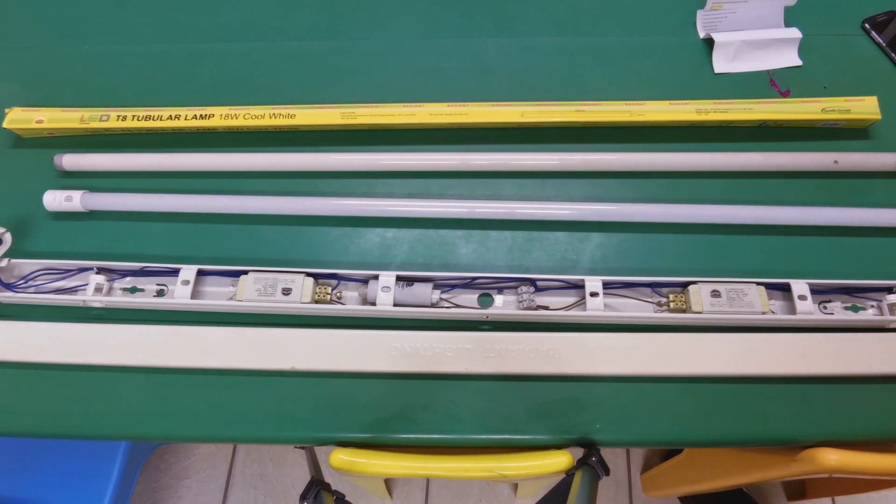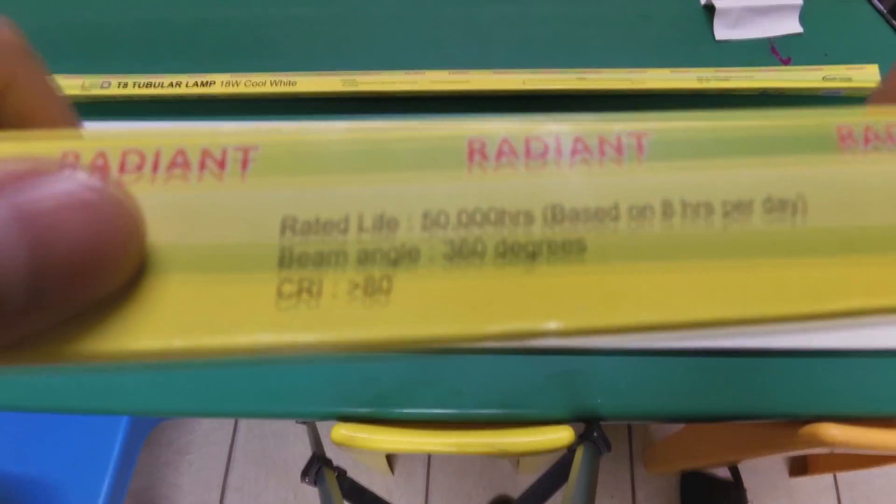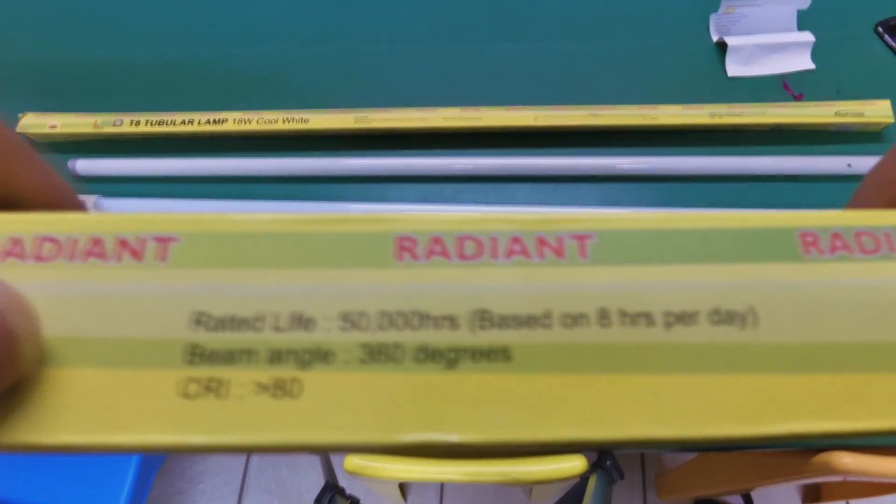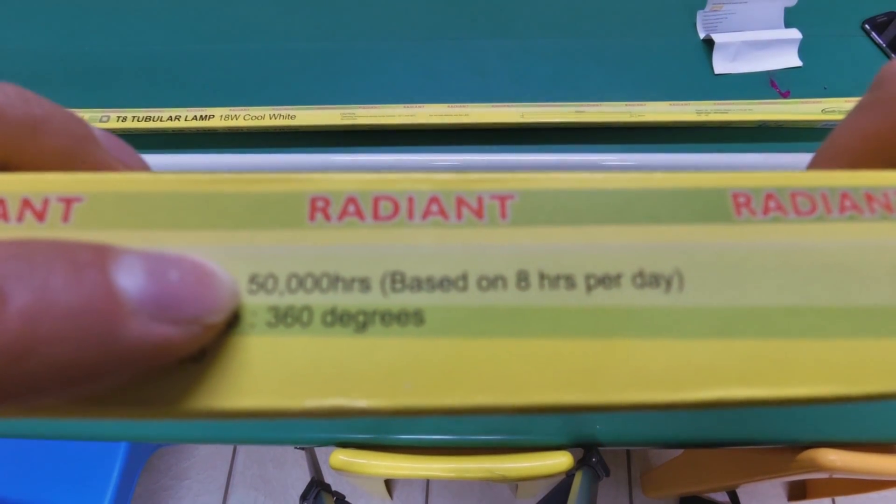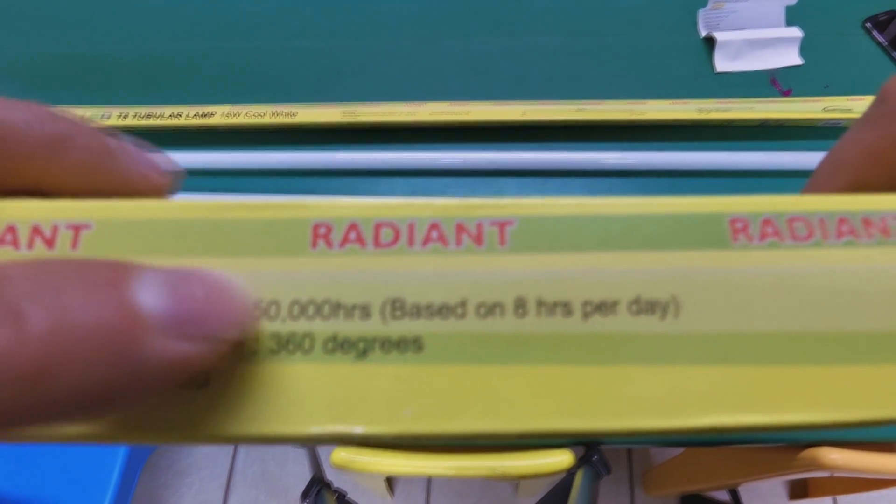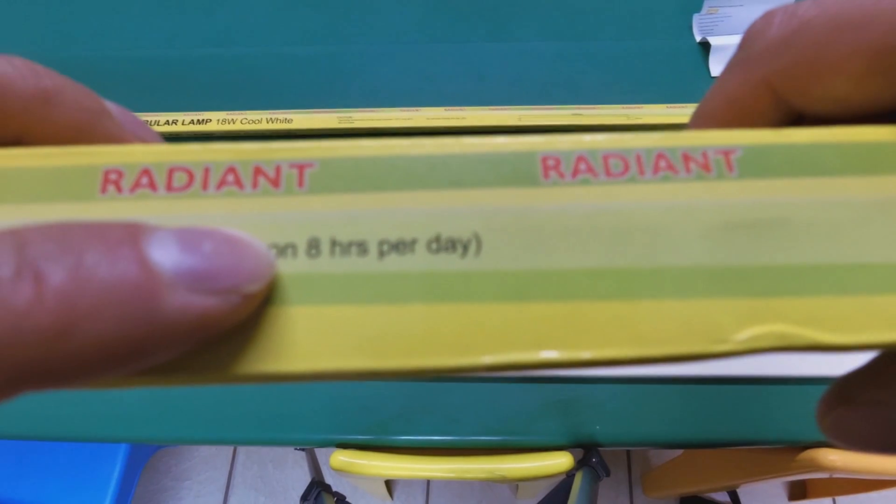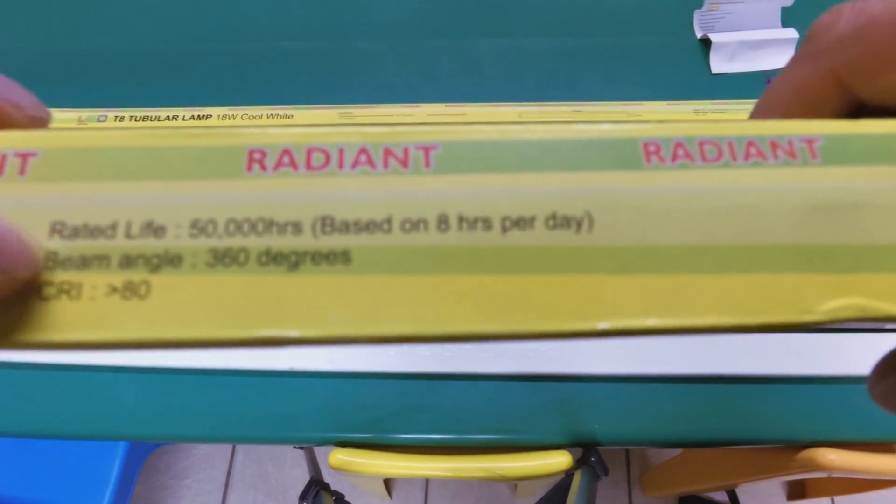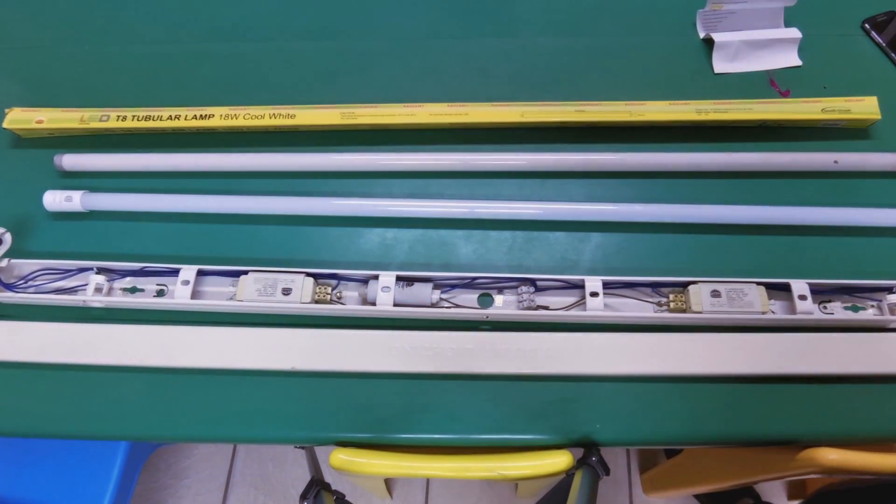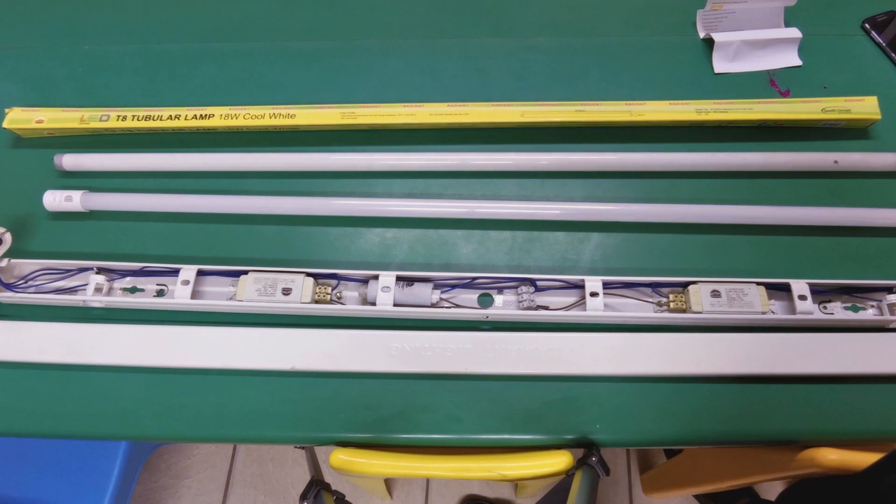Now in terms of this manufacturer, again not all manufacturers are the same, they are rating their tube at 50,000 hours, assuming that it's on eight hours a day. So that's an important thing: how many hours will you get out of the tube? So when you are buying your tube, you must look for that.